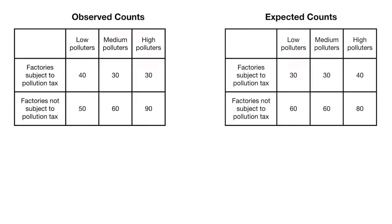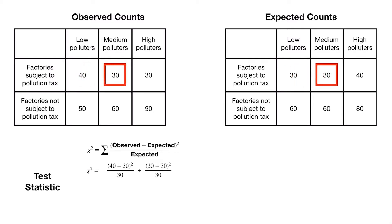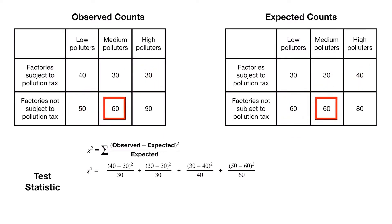The test statistic is just like the one we've used before. The chi-squared test statistic is the observed count minus the expected count, squared, divided by the expected count, summed up for each cell. For the first cell, we have an observed count of 40 low polluters in factories subject to the tax and an expected count of 30, so we do 40 minus 30, squared, divided by 30. We continue this for each cell. Once we sum all of them up, we get a chi-squared statistic of 8.75, with degrees of freedom equal to 2.